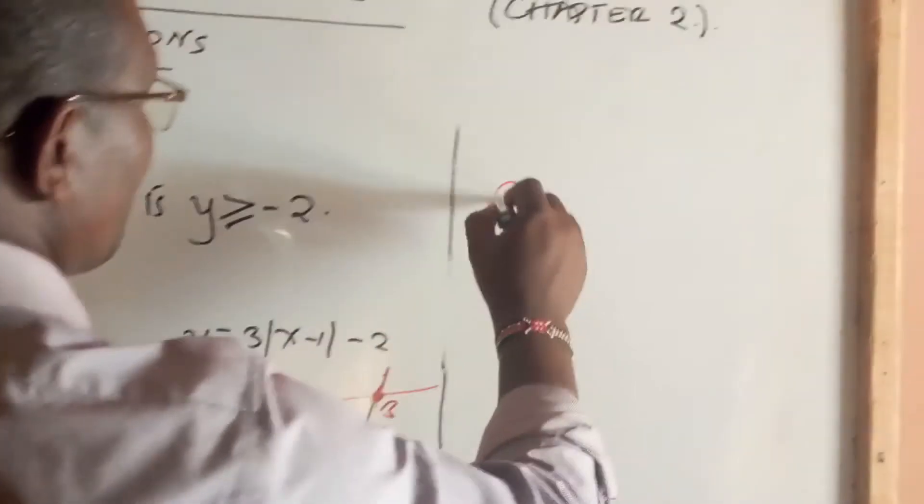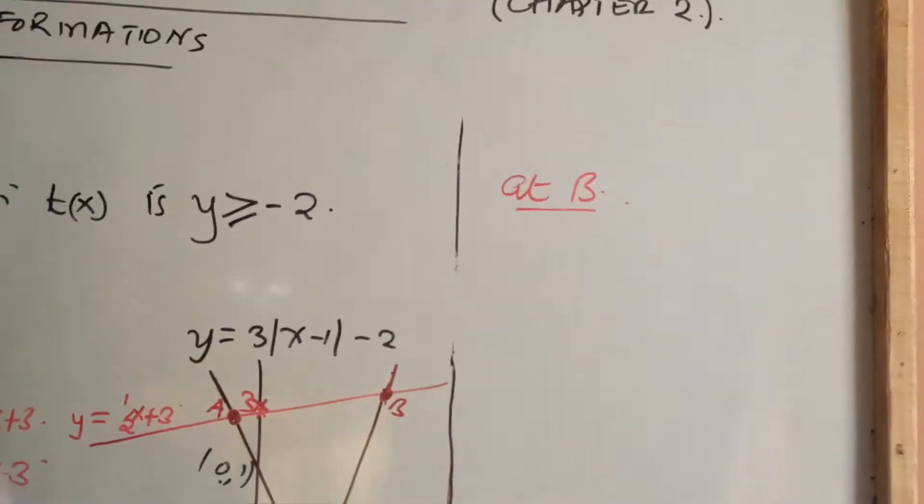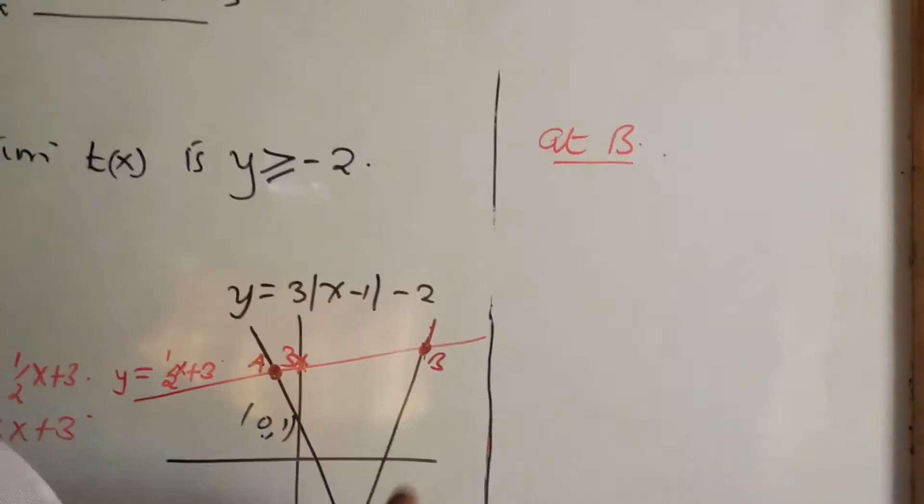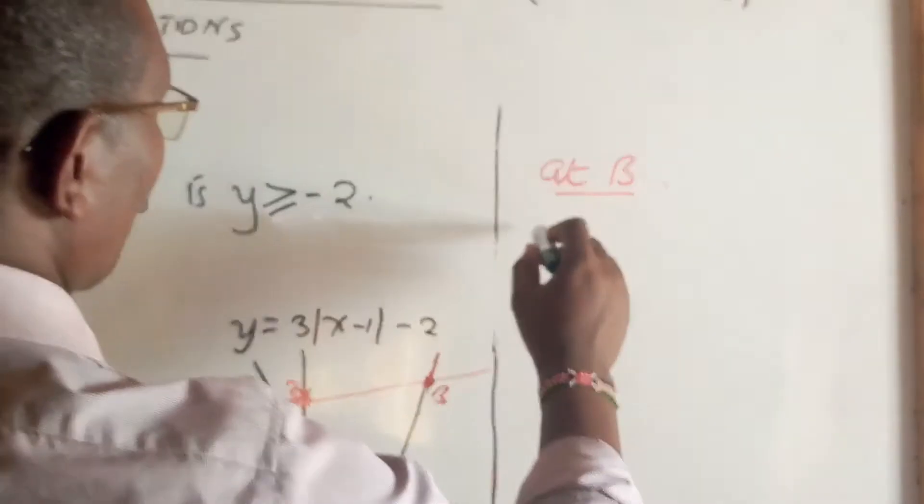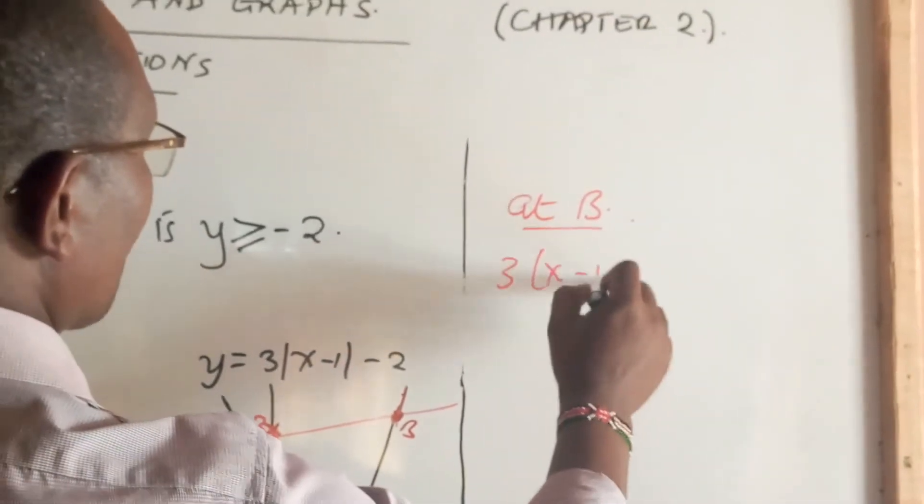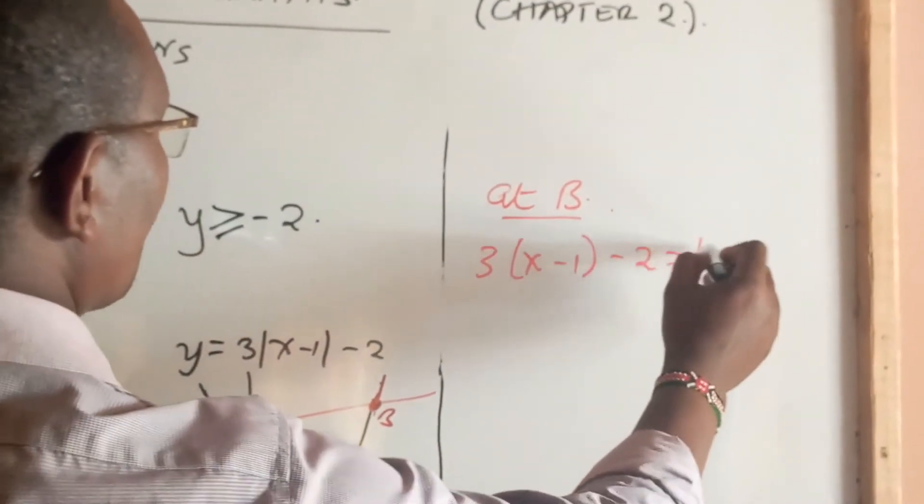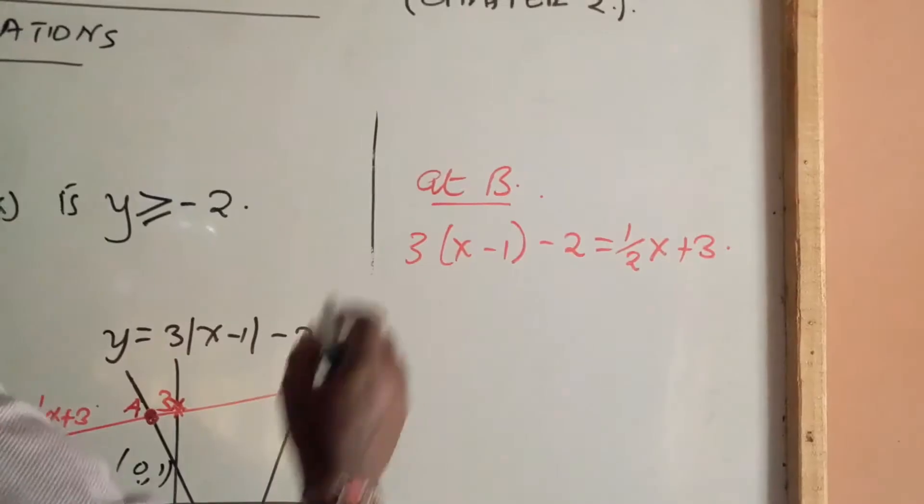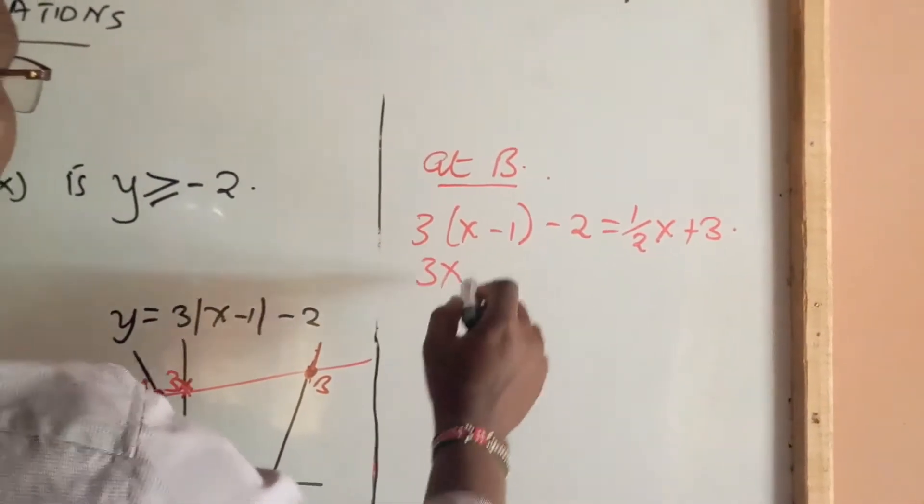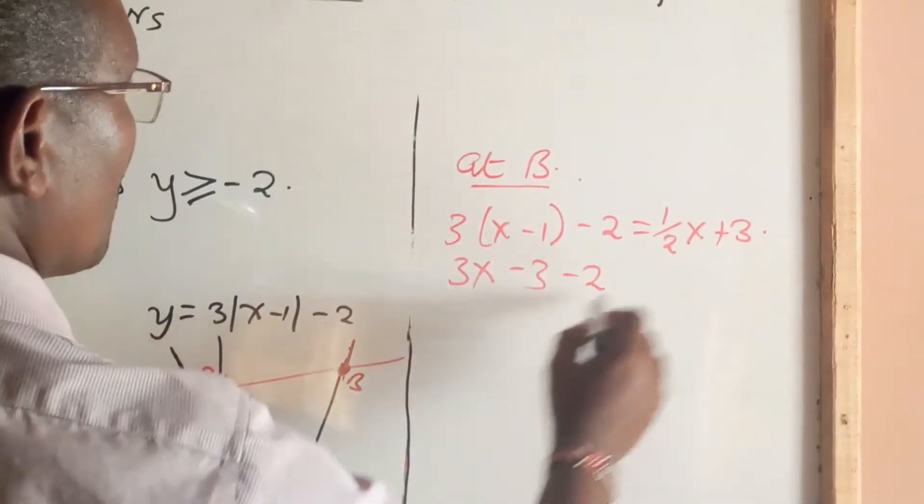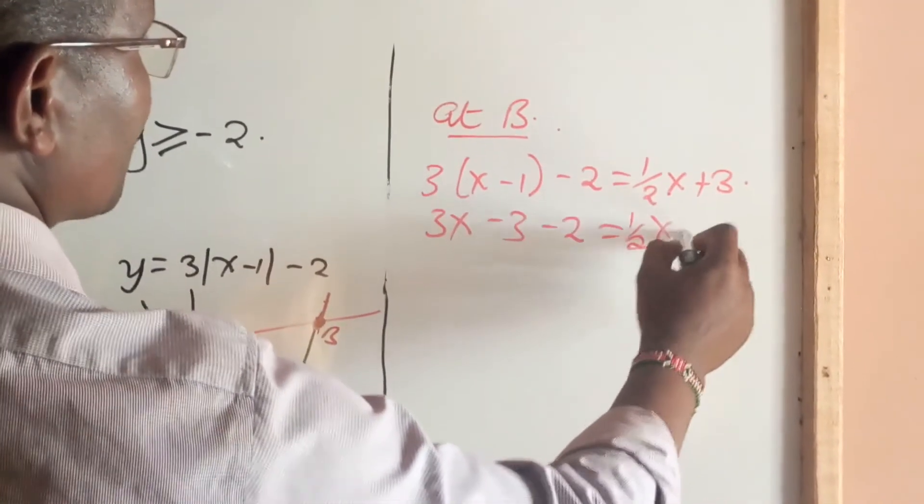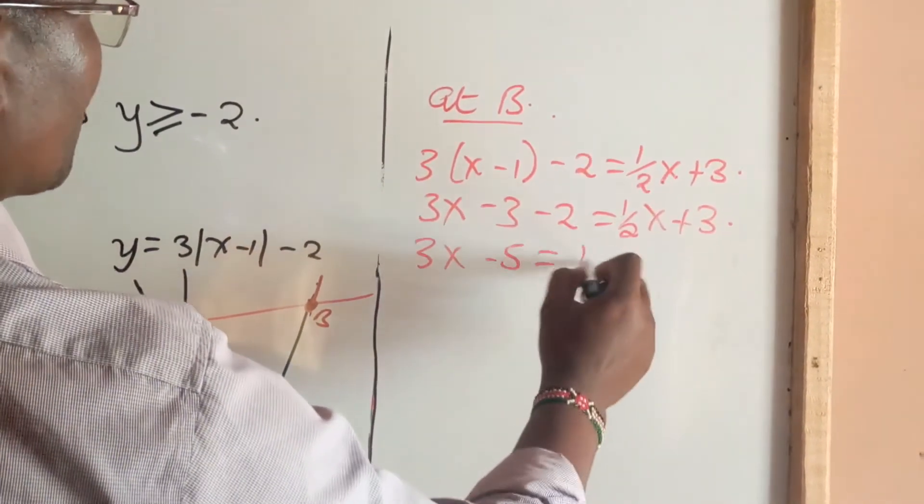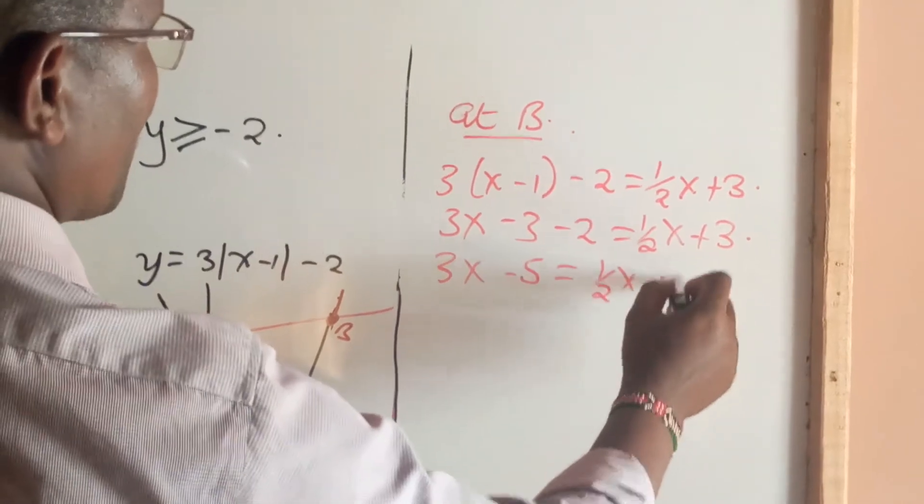At point B, we are going to talk about where it meets the graph in the original part. So this is the positive part 3(x-1) - 2 = (1/2)x + 3. So, opening bracket, 3x - 3 - 2 = (1/2)x + 3. So 3x - 5 = (1/2)x + 3.